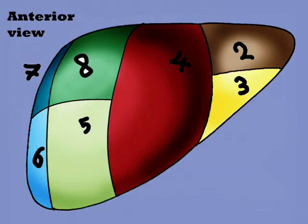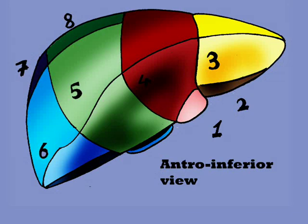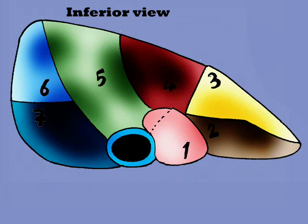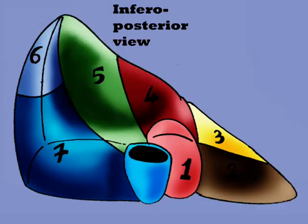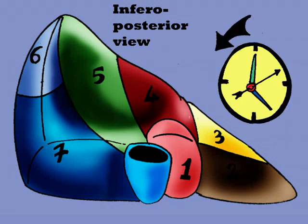This is the anterior view. Now the liver is slightly rotated to show this view, then rotated more and more to show the inferior view. In this view, segment eight is not apparent because it is in the anterior and superior parts of the liver. This is the postero-inferior view, and segment eight is also not apparent. The segments are arranged in a counterclockwise manner.